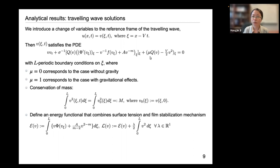Here we have a constant mu that can be used to indicate two separate cases. When mu is 0, we have the case without gravity, and when mu is 1, we have the case with gravitational effects. And we also define an energy functional that combines the surface tension and the film stabilization mechanism.